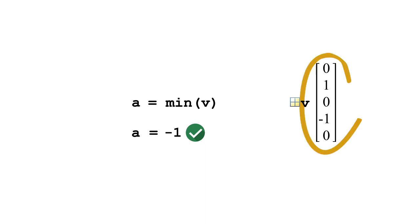When we pass a vector to the min function, it returns the smallest value in the vector. What you may not have known is that the min function can also tell us the location of the smallest value.